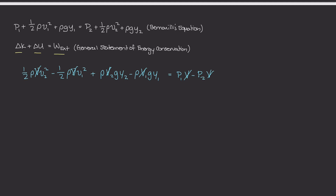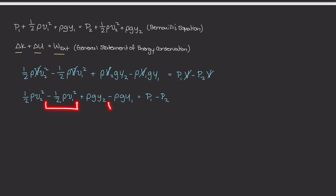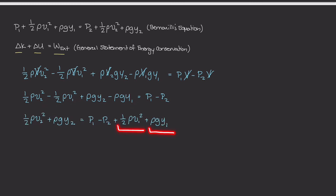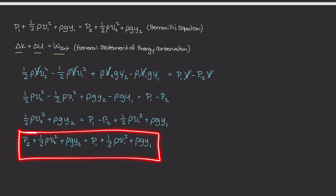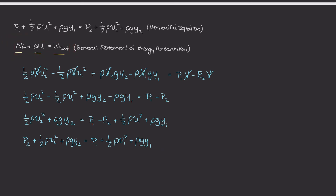Rewriting after canceling V, we have p1 minus p2 on the right and all the kinetic and potential terms on the left. Grouping by respective points and moving the point-1 terms to the right-hand side, then adding p2 to both sides, we arrive at this equation — which is Bernoulli's equation. This equation derived from the general statement of energy conservation is exactly Bernoulli's equation.